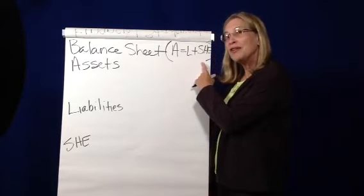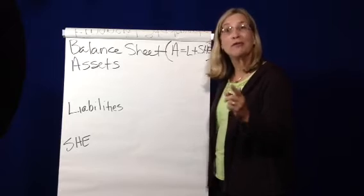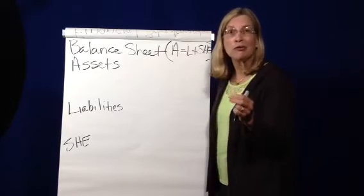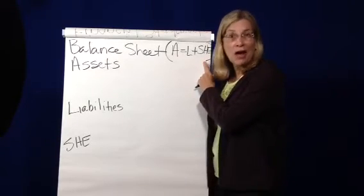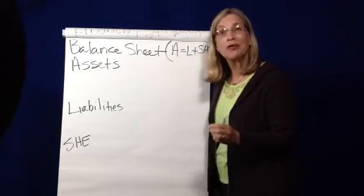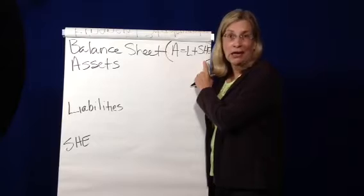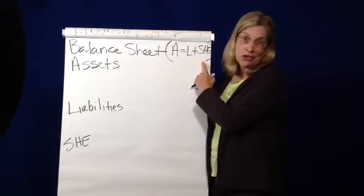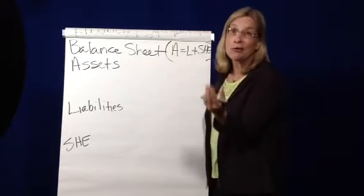The reason it's shareholders equity here is because we're talking about a balance sheet for a corporation. A corporation has stockholders or shareholders, so its ownership section is called stockholders equity. If I was talking about a partnership or a sole proprietorship, this would be called owner's equity instead. So you can have A equals L plus SE, or you could have A equals L plus OE, owner's equity.